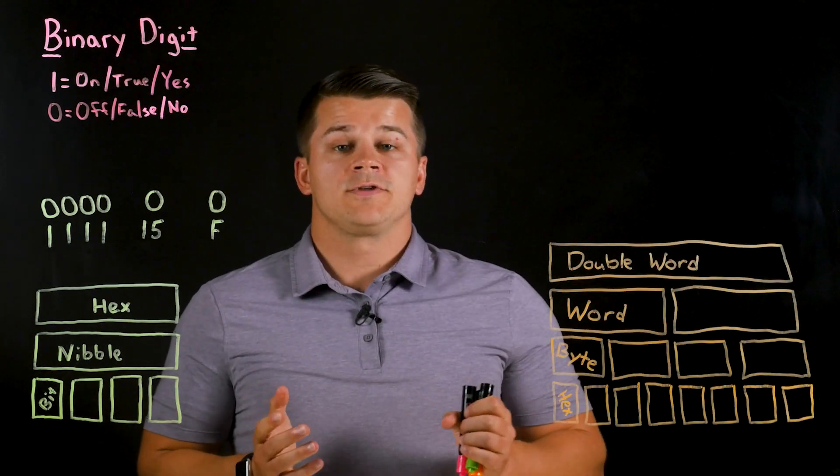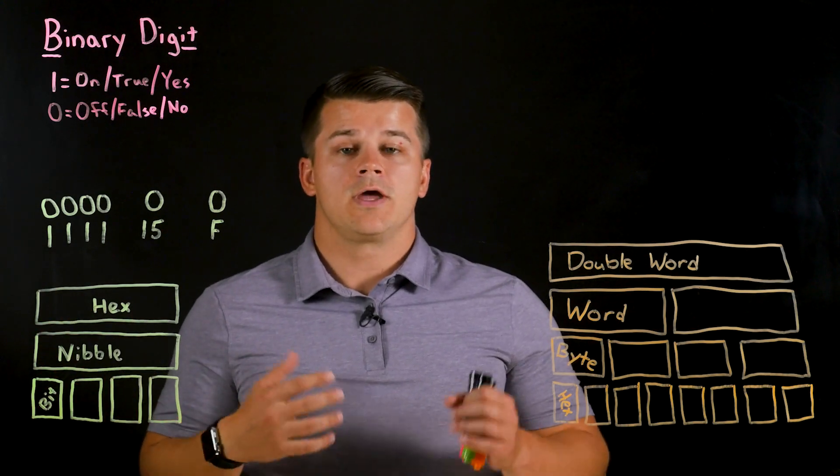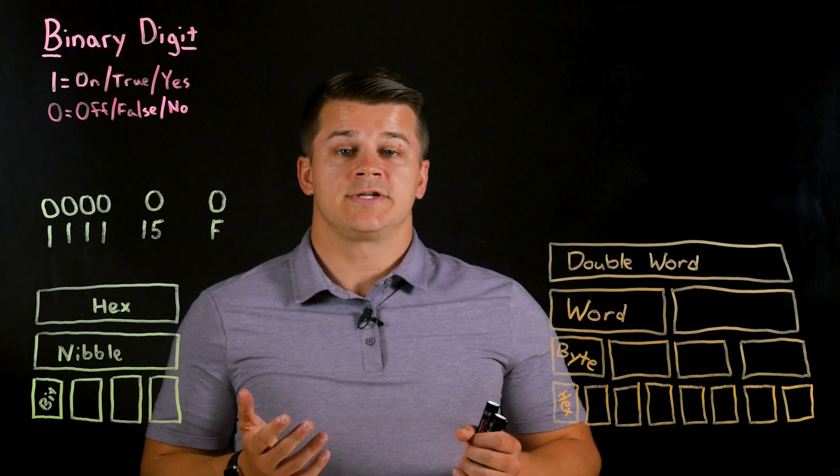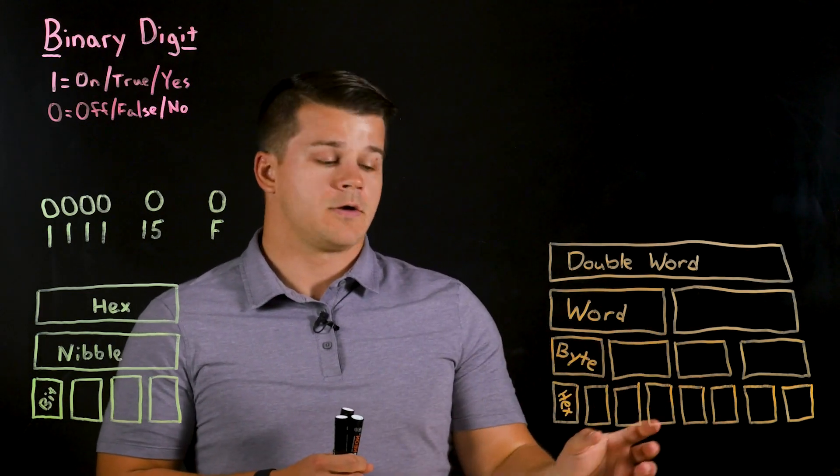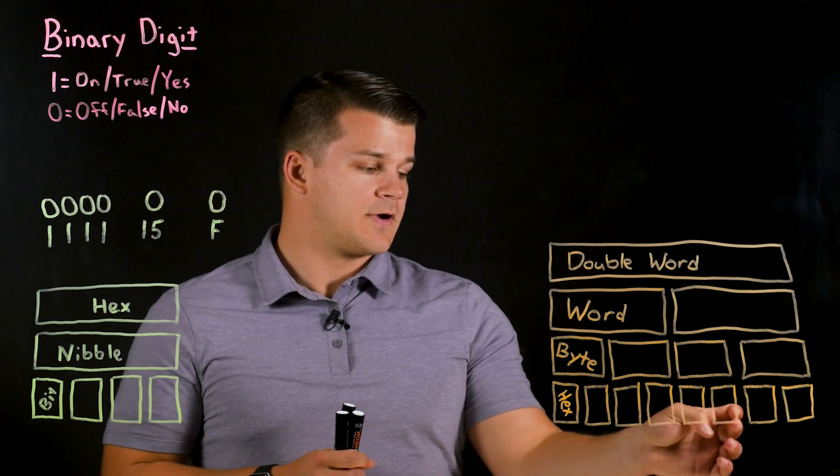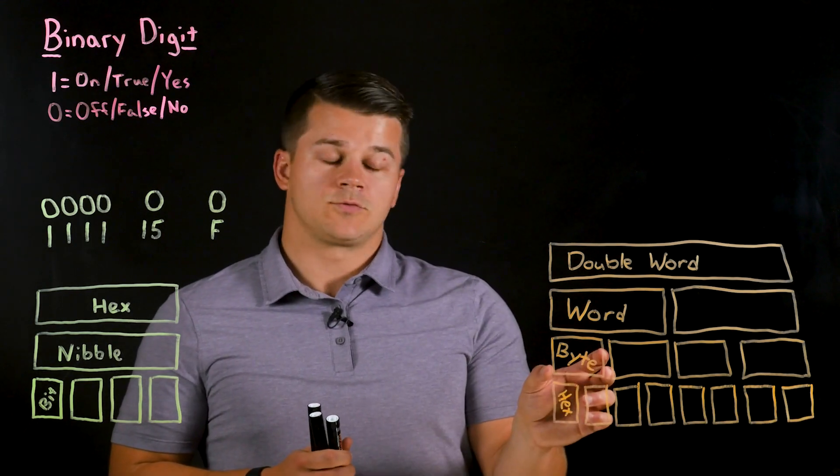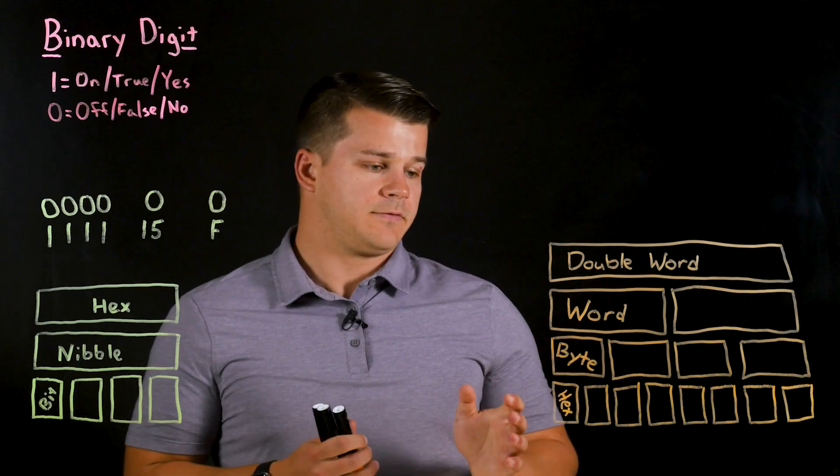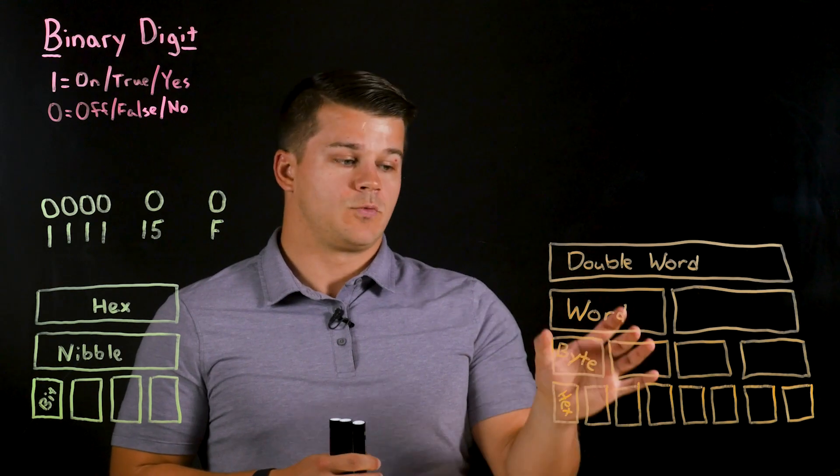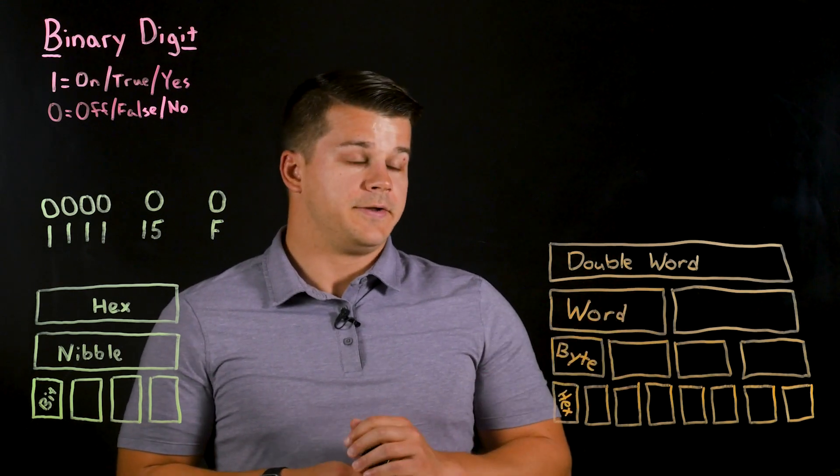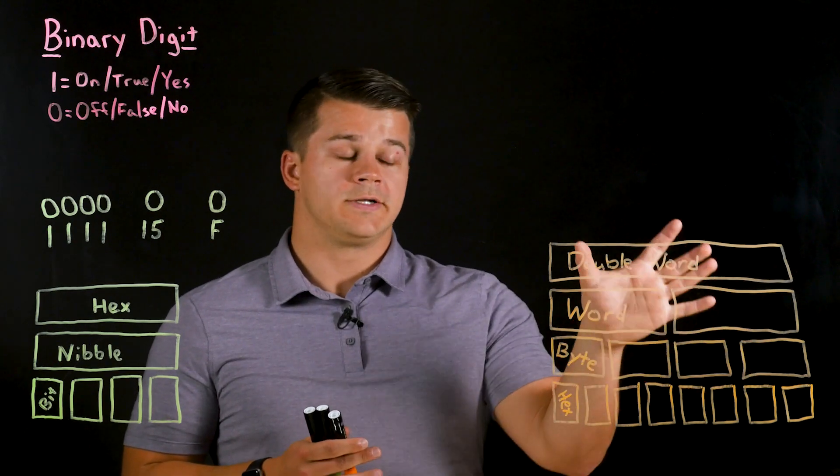So now that we've talked about the basic bit for a zero and one and a hex which is four bits, we can then group those together into even larger data types for even more complex communication. So if we look over here we have eight different boxes for a hex value. If we group two of them together, that's what's referred to as a byte. And then if we group two bytes together, so four hexes, we have a word. And then if we group two words together, we get a double word.